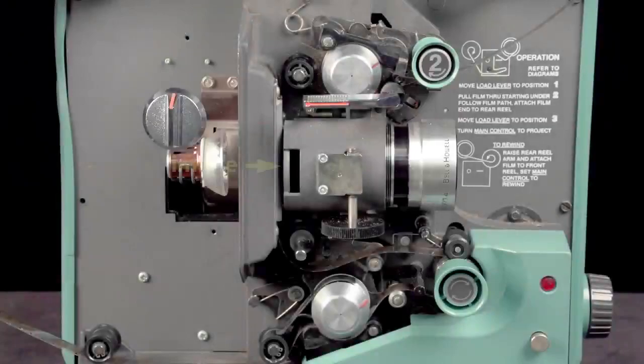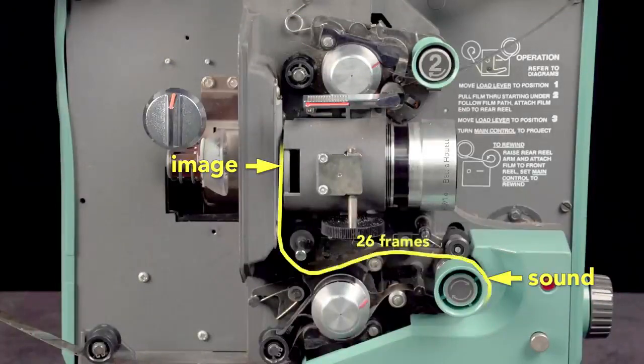Because the image is projected here, and the sound is read down here, the soundtrack is offset 26 frames ahead of the picture in 16mm films. This offset ensures that the picture and sound are correctly synced.